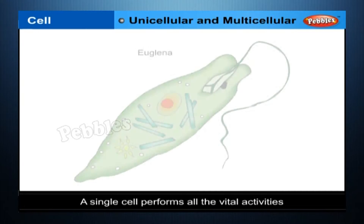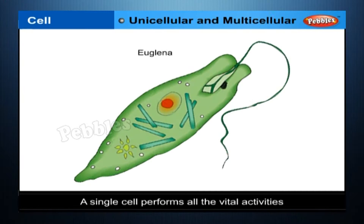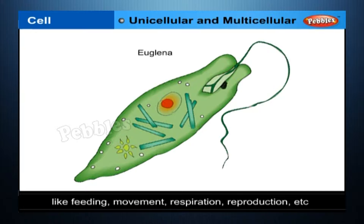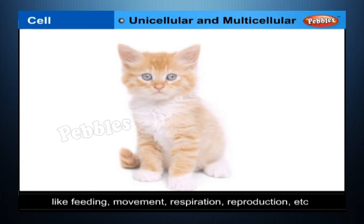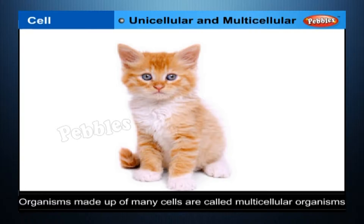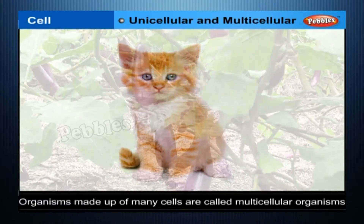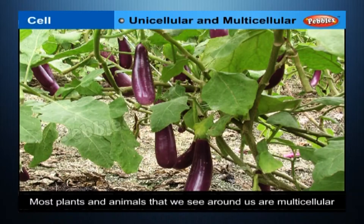In a unicellular organism, a single cell performs all the vital activities like feeding, movement, respiration, reproduction, etc. Organisms made up of many cells are called multicellular organisms. Most plants and animals that we see around us are multicellular.